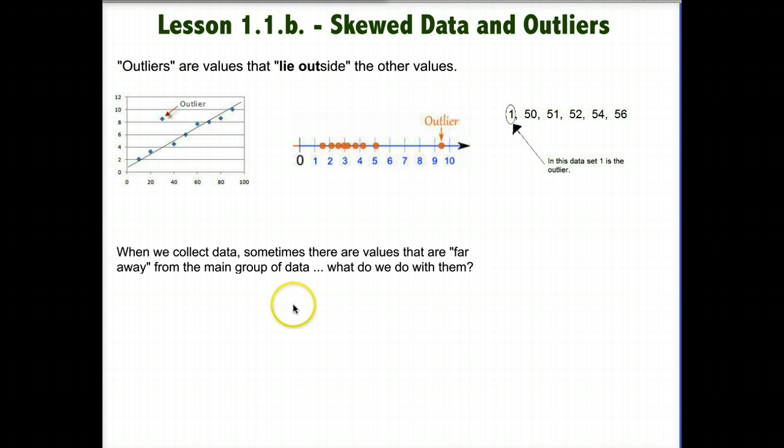So here's three examples of outliers, how they look graphically. In this first example, you can see the outlier right up here. And over here in the middle, it's way out to the right. And on the left, you can look at the values and you can see that one clearly does not fit in. So when we collect data, there are sometimes values that are far away from the main group of data. So the question is, what do we do with them?